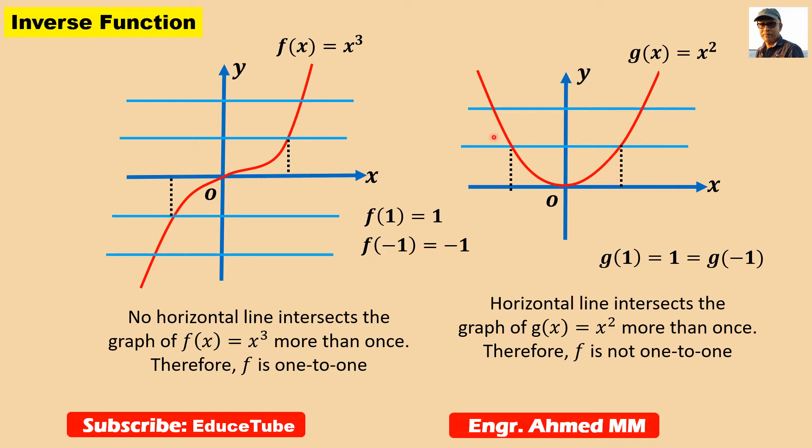But on the right hand side, the horizontal line intersects this curve y equal to x squared at two points. So it is not satisfying to get the function as one to one. So this one is one to one functions, and these are important because these are precisely the functions that possess inverse functions. So it is a very important point to understand.